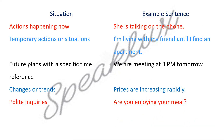So these were our situations where you can use the Present Continuous Tense. Let's recall: actions happening now — the actions that are happening now; temporary actions and situations — those situations which were not in the past but for a little time, now those activities are going on; future plans with a specific time — there is a future plan but we know the specific time; changes and trends — if you have to define any changes; and polite inquiries. In all these things you will use Present Continuous Tense. I hope this video is clear to you. To get such more videos, please subscribe to this channel.